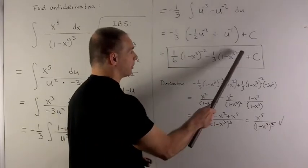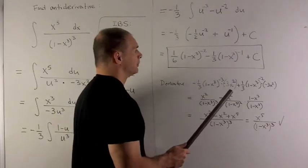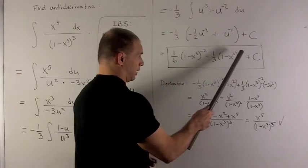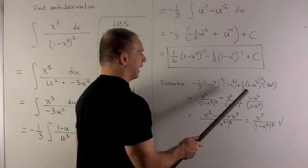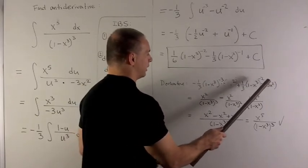For this term we bring the minus 1 down, I get 1 third. We're gonna take 1 off of that, gives me a minus 2. Derivative of the inside gives me a minus 3x squared.